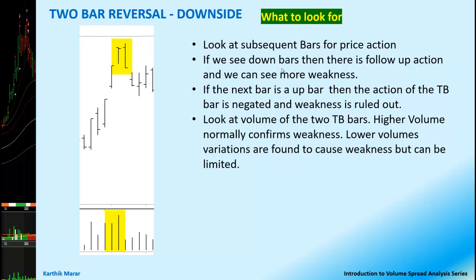If we see down bars, then there is follow-up action and we can see more weakness. If the next bar is an up bar, then the action of the two-bar reversal pattern is negated and the weakness is ruled out. Look at the volume of these two bars — higher volume normally confirms the weakness. Lower volume variations are also found to cause weakness, but the weakness can be limited.